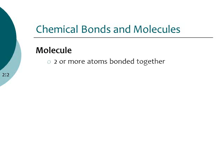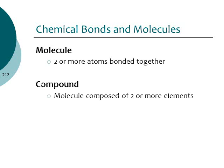A molecule is defined as two or more atoms that are bonded together. Another term for molecules is a compound — they're similar terms but a little different. A compound is specifically a molecule composed of two or more different elements, and I'll show you examples of a molecule versus a compound.